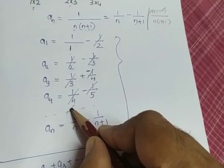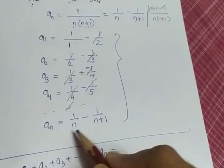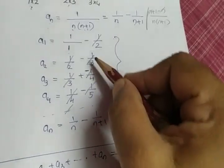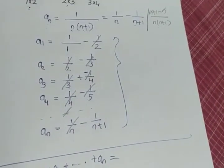first term will be 1 by 5, it will get cancelled. Likewise, in the nth term, 1 by n and 1 by n plus 1. If you are following the pattern, which term will get cancelled? 1 by n gets cancelled.